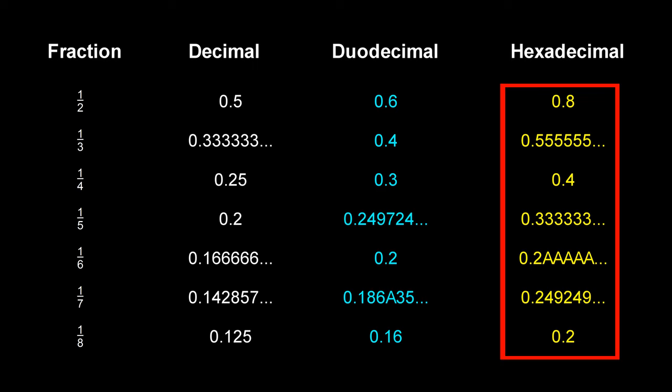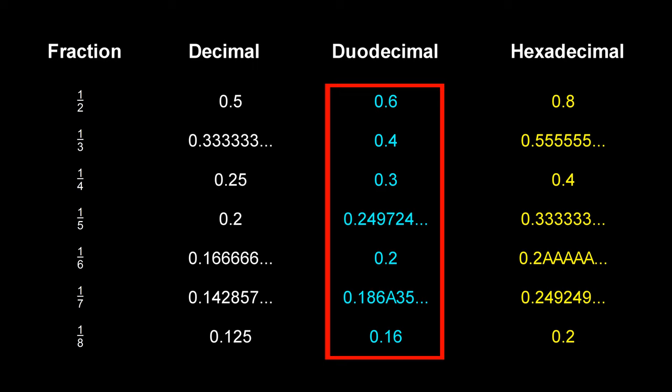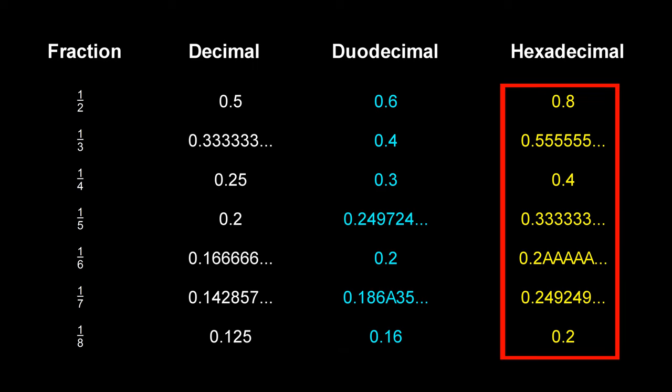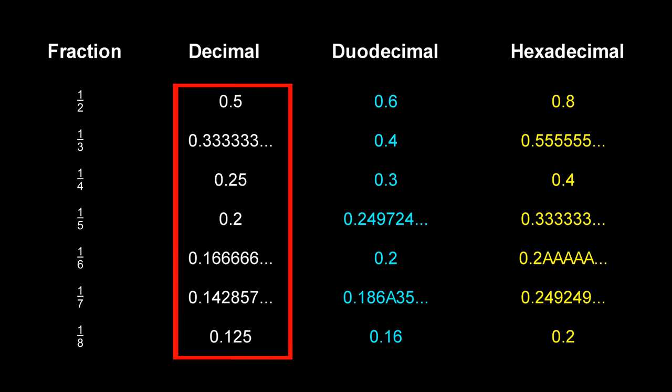In hexadecimal, a half, quarter and eighth are round numbers but a third, fifth, sixth and seventh are not. So for fractions duodecimal is the best, followed by hexadecimal, and decimal — which is the system we use — is the worst.